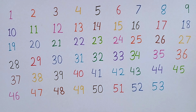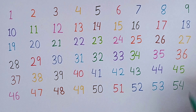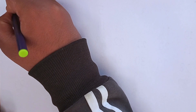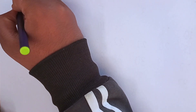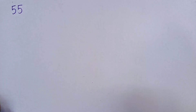Again, repeat with me: 46, 47, 48, 49, 50, 51, 52, 53, 54. Now I will write 55. 5, 5 — 55. This is 55.